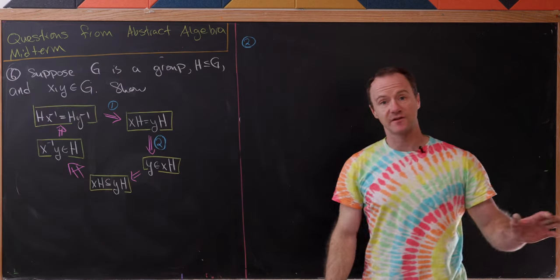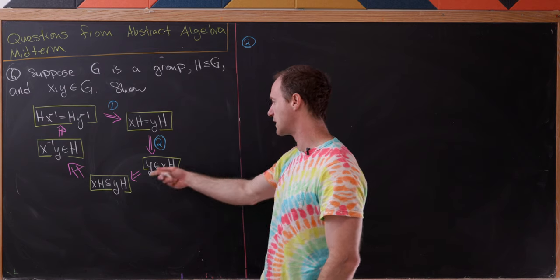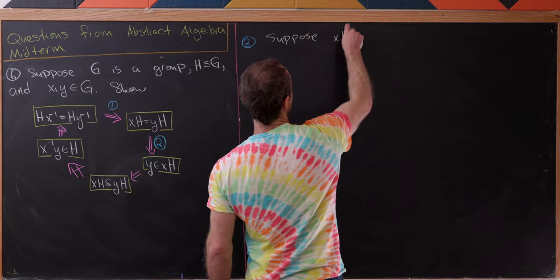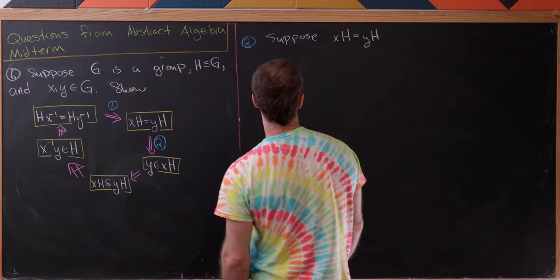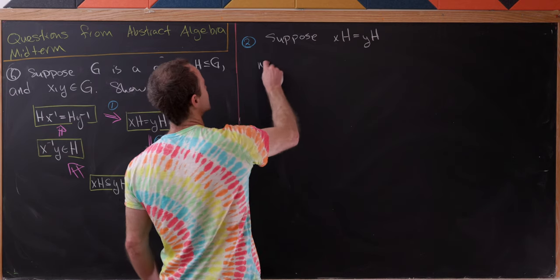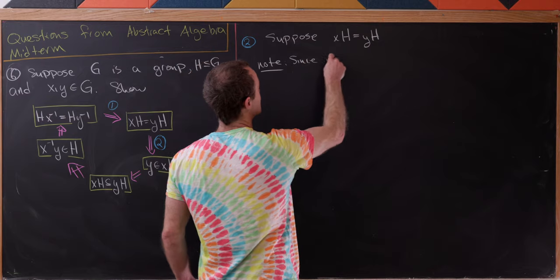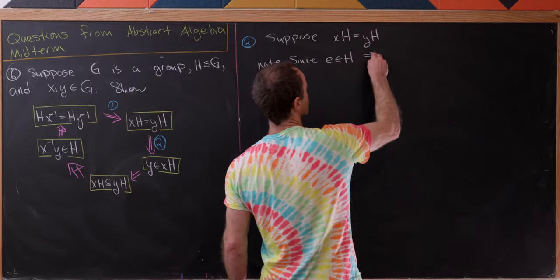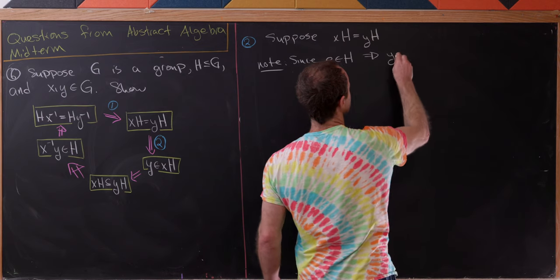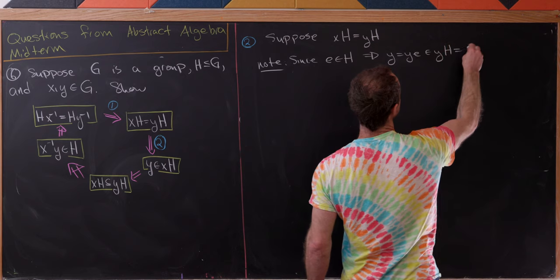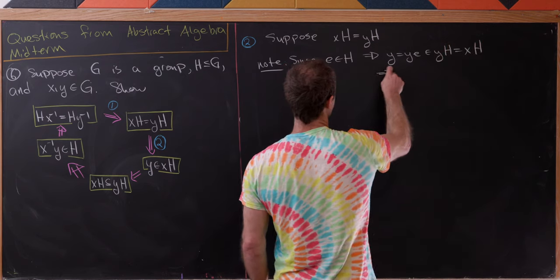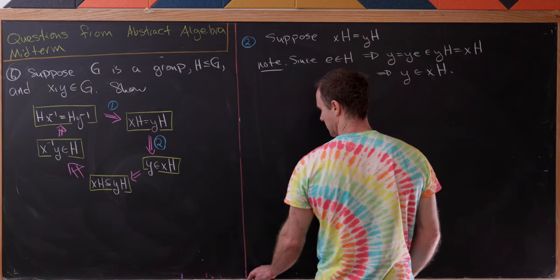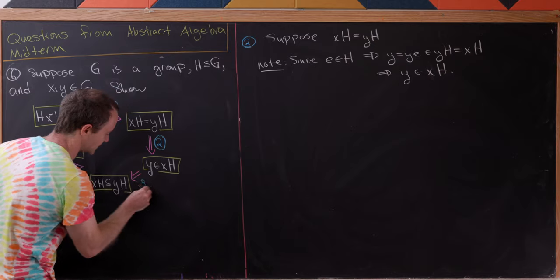For the second arrow: xH = yH implies y is an element of xH. Suppose xH = yH. Since e — the identity — is inside H (H is a subgroup), we know y·e = y is inside yH, which equals xH. So y is inside xH. That one is quite short. Now let's move on to the third arrow.